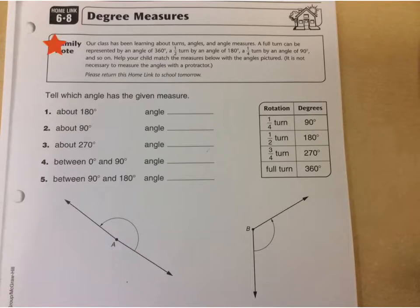Okay, let's take a quick look at this homelink 6.8 degree measures for everyday math third grade. And we're going to be talking about angles and measuring angles.